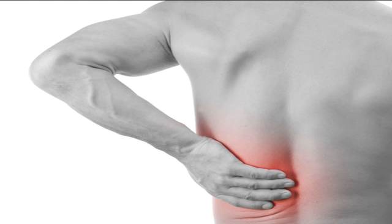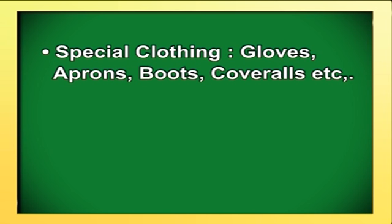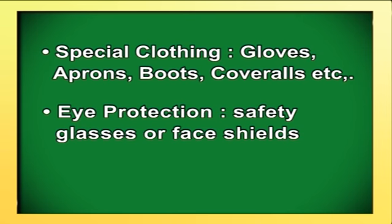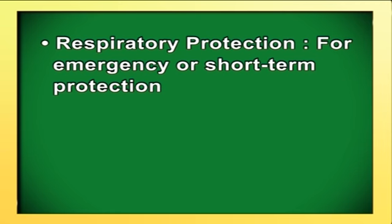Common symptoms and personal protection: identify aches or pains, illnesses and injuries that are associated with your work. Identify and recognize the exposures and hazards linked to work-related illnesses and injuries. Personal protective equipment is the most important, for example special clothing such as gloves, aprons, boots, coveralls. Eye protection: safety glasses or face shields. Hearing protection. Respiratory protection for emergency or short-term protection.